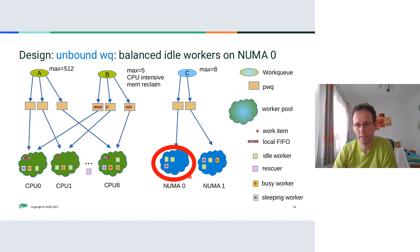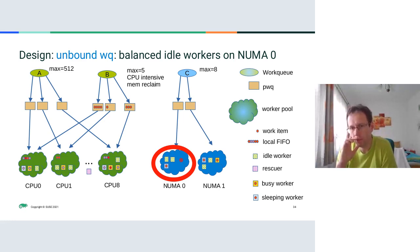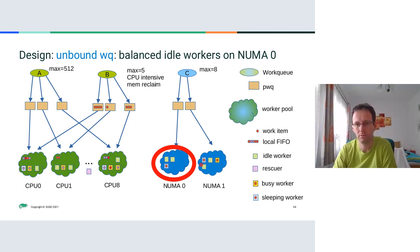The reason unbound workqueue workers use a separated worker for each work item is that they are suited for more CPU-intensive work items where you don't want workqueue-level balancing, but rather want the system scheduler to balance CPU access for all these workers and process them alongside the rest of the system.